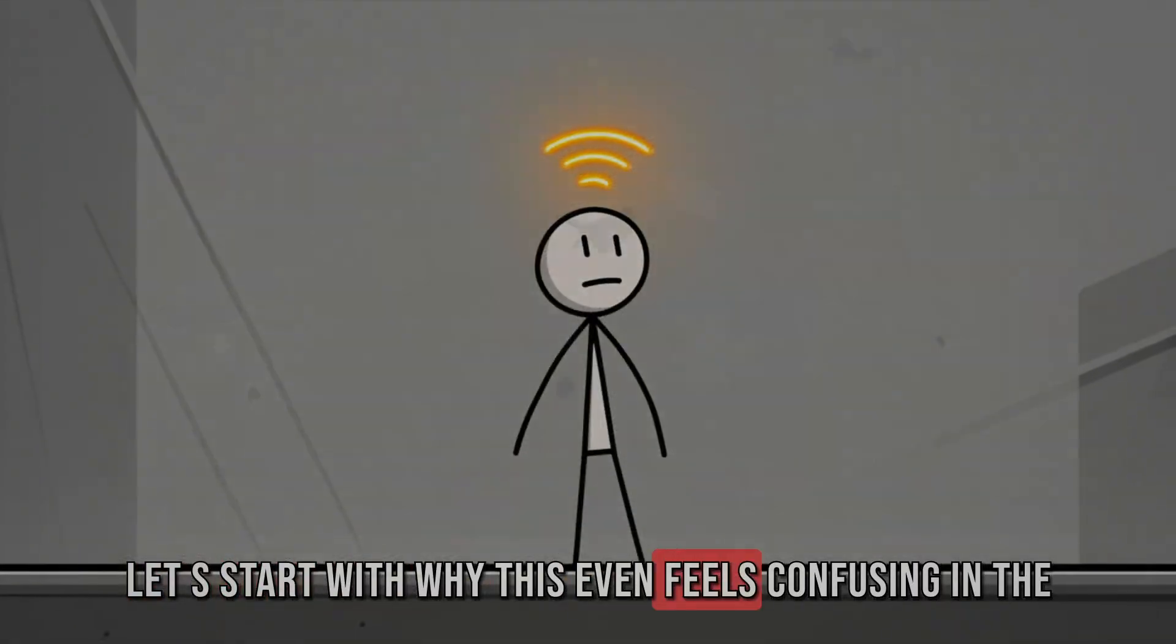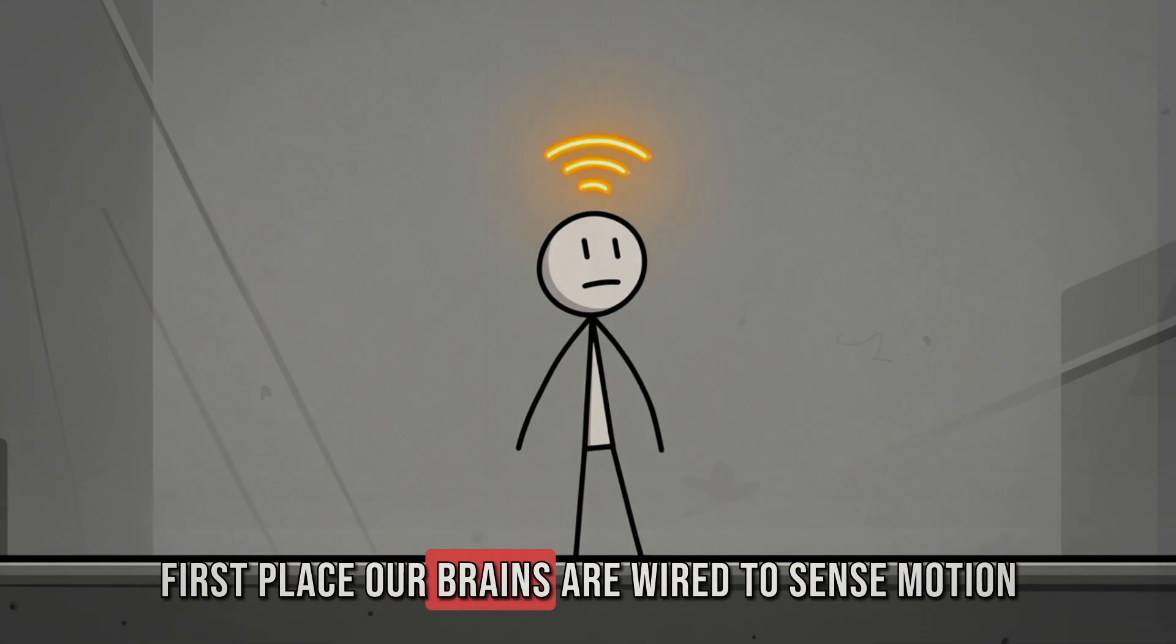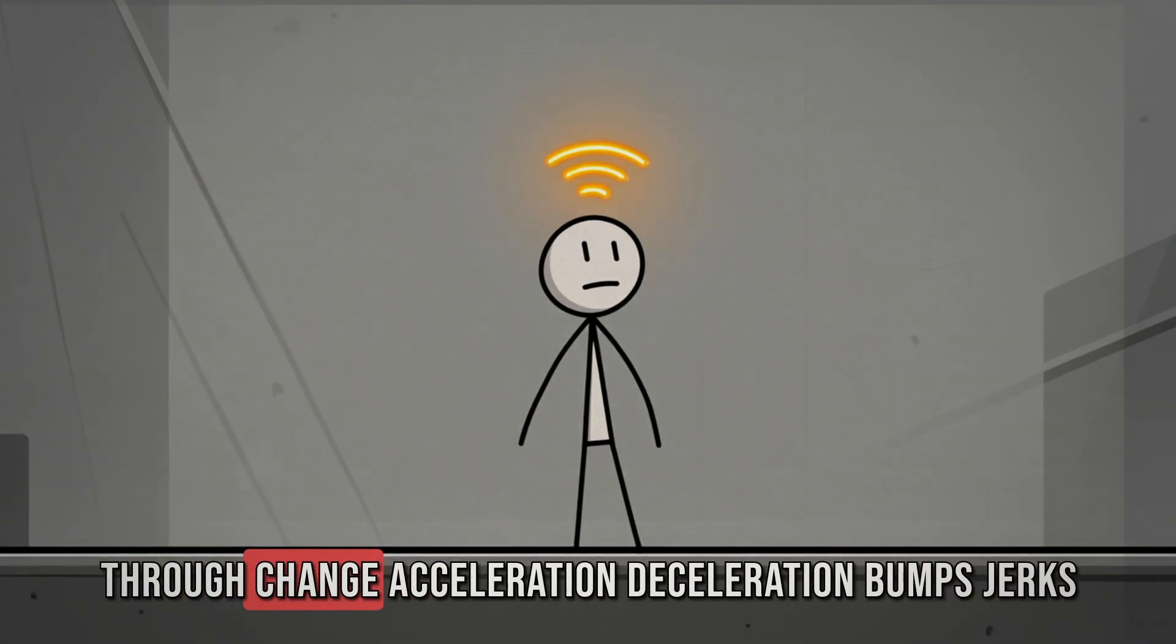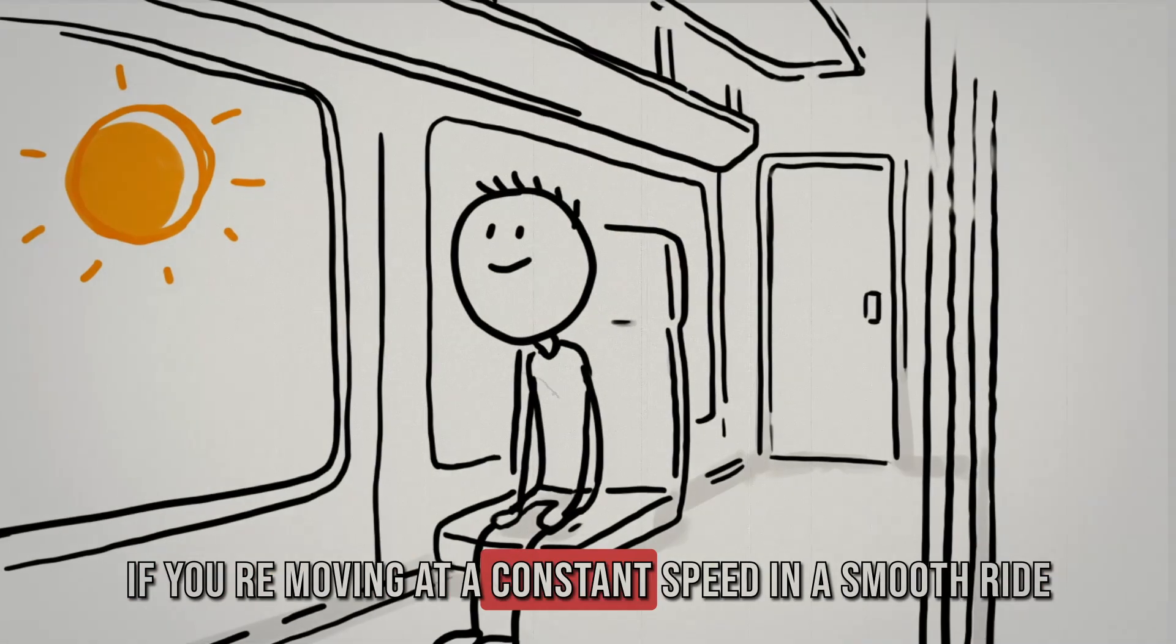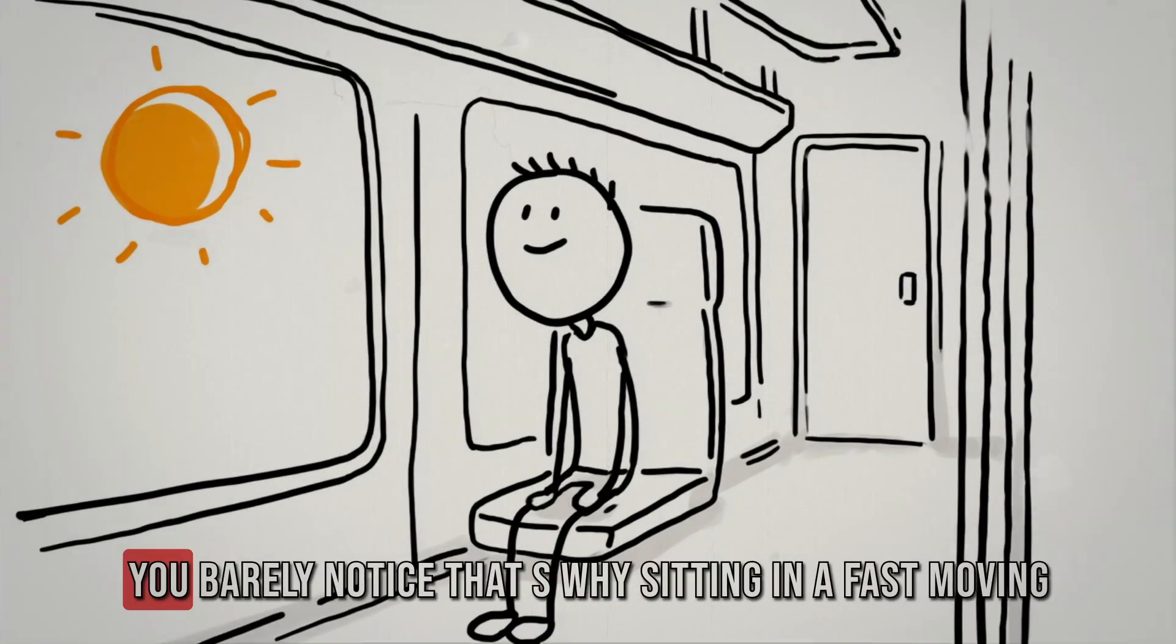Let's start with why this even feels confusing in the first place. Our brains are wired to sense motion through change: acceleration, deceleration, bumps, jerks. If you're moving at a constant speed in a smooth ride, you barely notice.